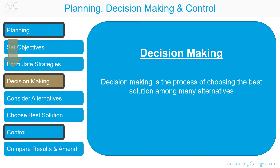Decision making is the process of choosing the best solution among many alternatives. This managerial function is a collaboration between planning and control. The quality of decisions can be improved if all alternative information can be collected and presented to management. One of the important roles of the accounting information system is to supply the information to simplify this decision making process.